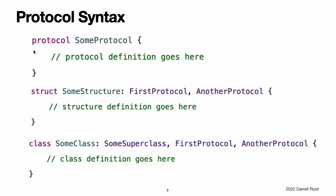Protocol Syntax. You define protocols in a very similar way to classes, structures, and enumerations. Custom types state that they adopt a particular protocol by placing the protocol's name after the type's name, separated by a colon, as part of their definition. Multiple protocols can be listed and are separated by commas. If a class has a superclass, list the superclass name before any protocols it adopts, followed by a comma.